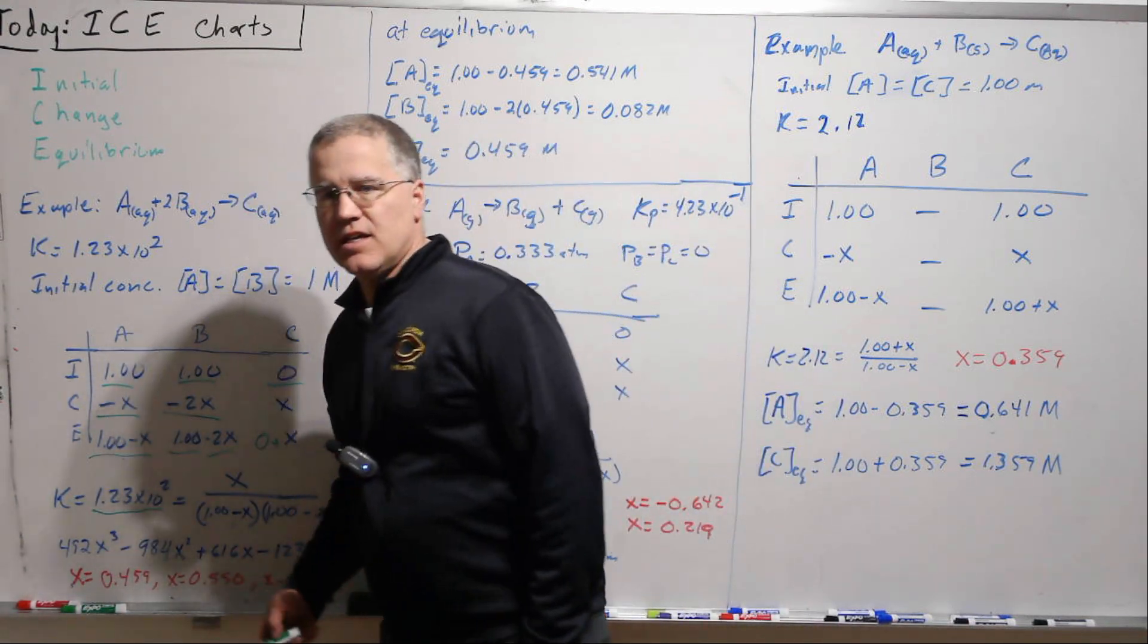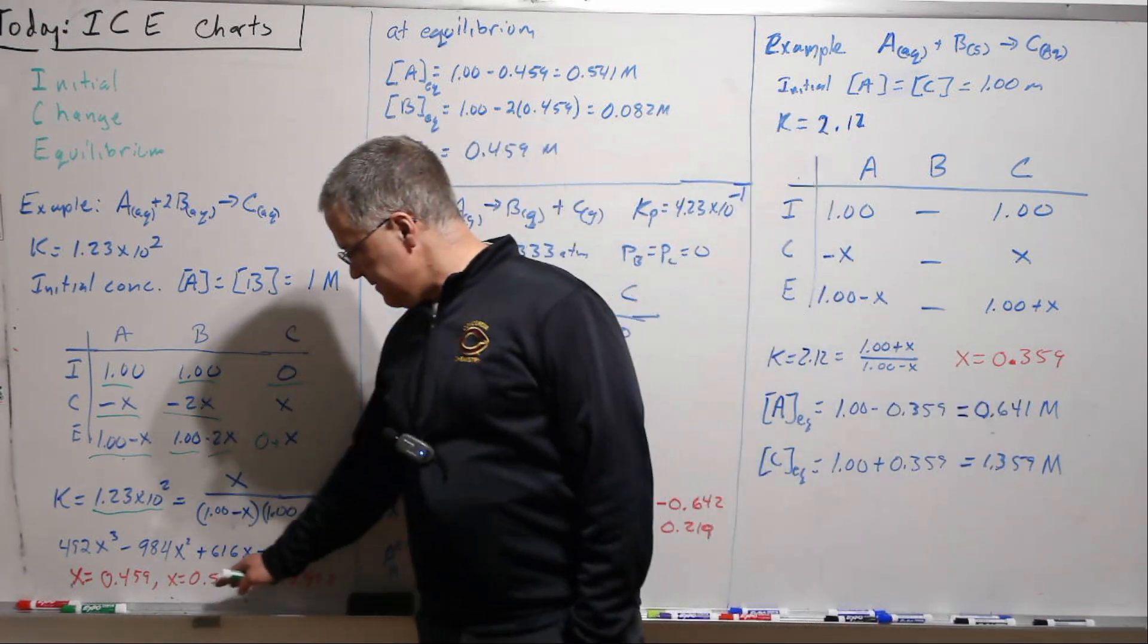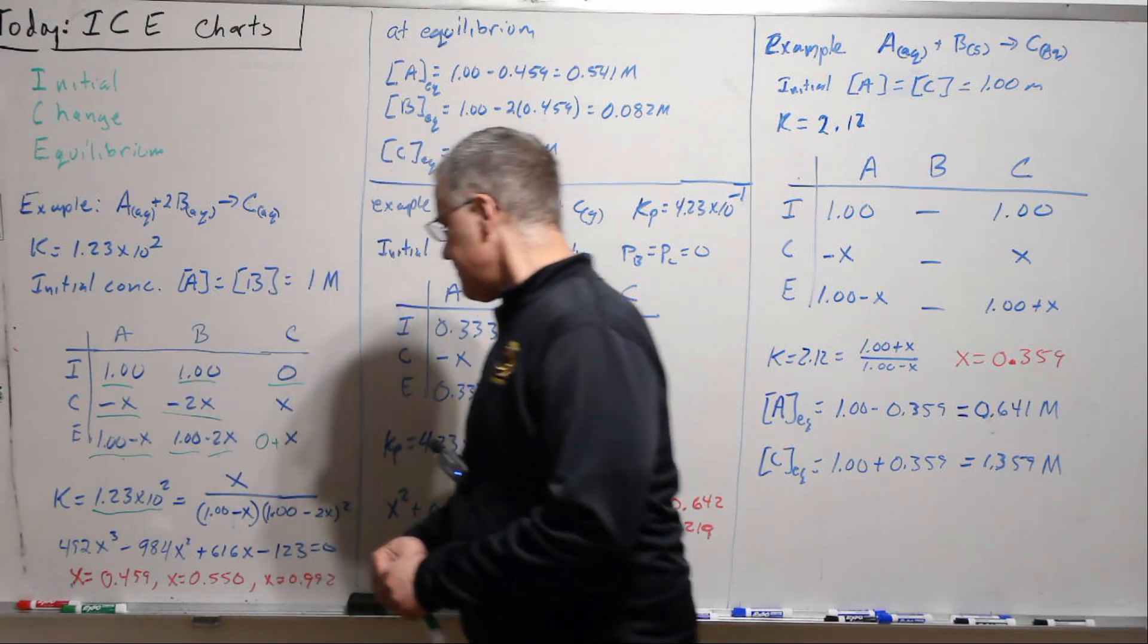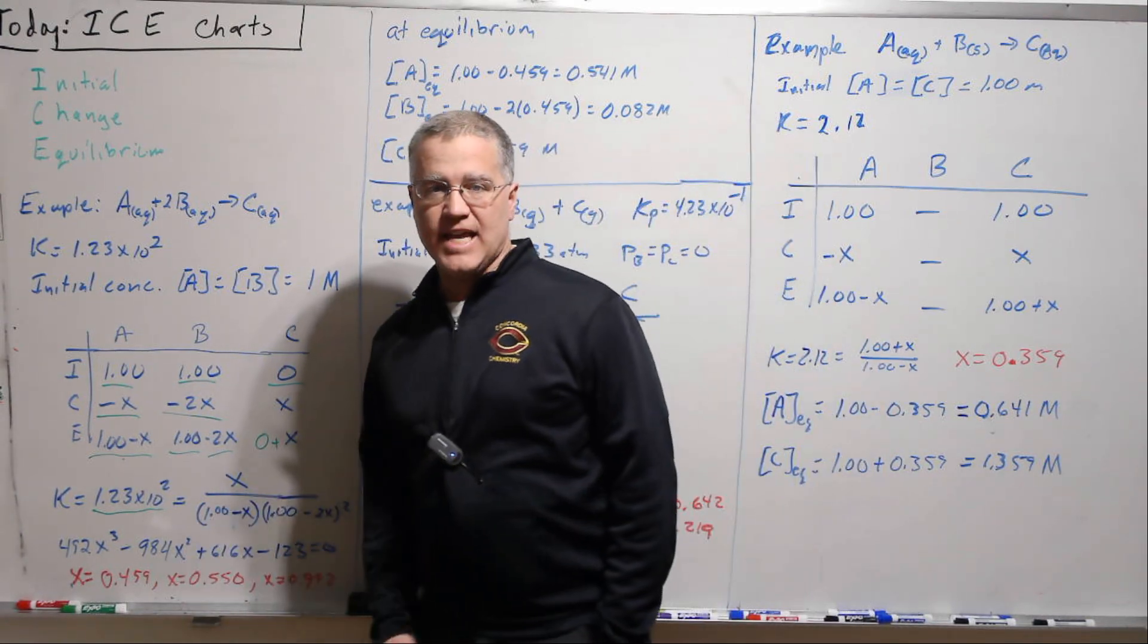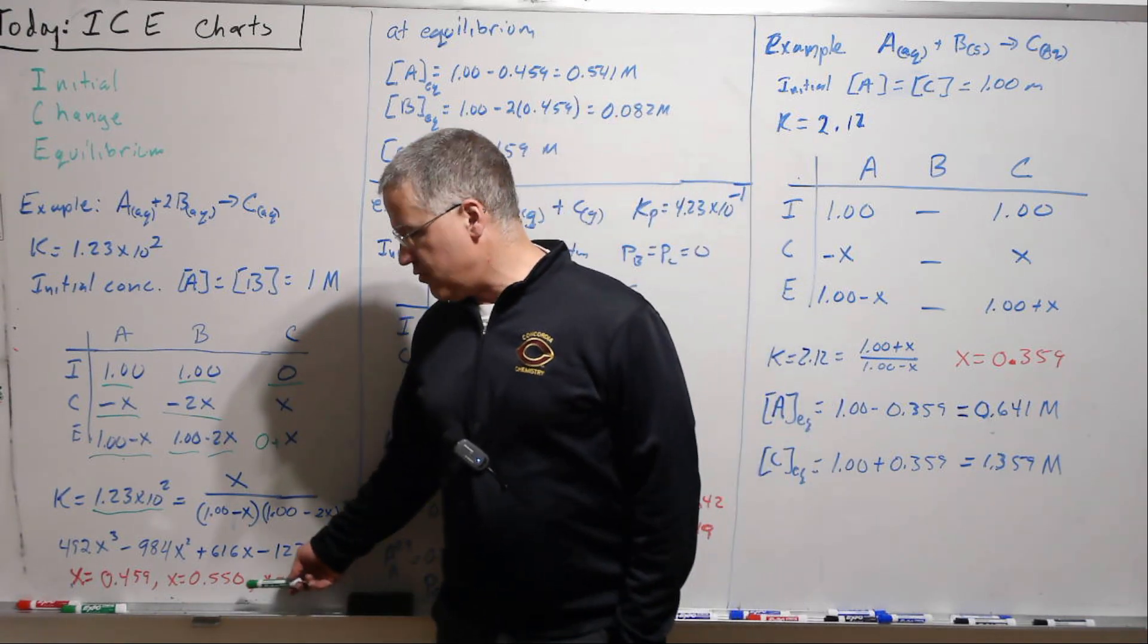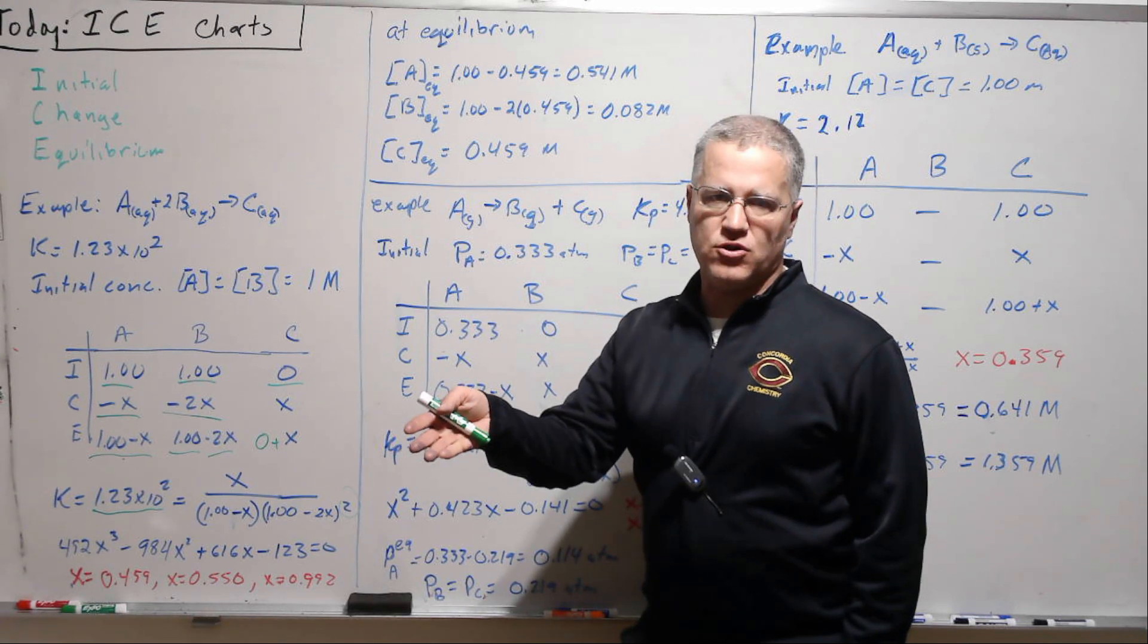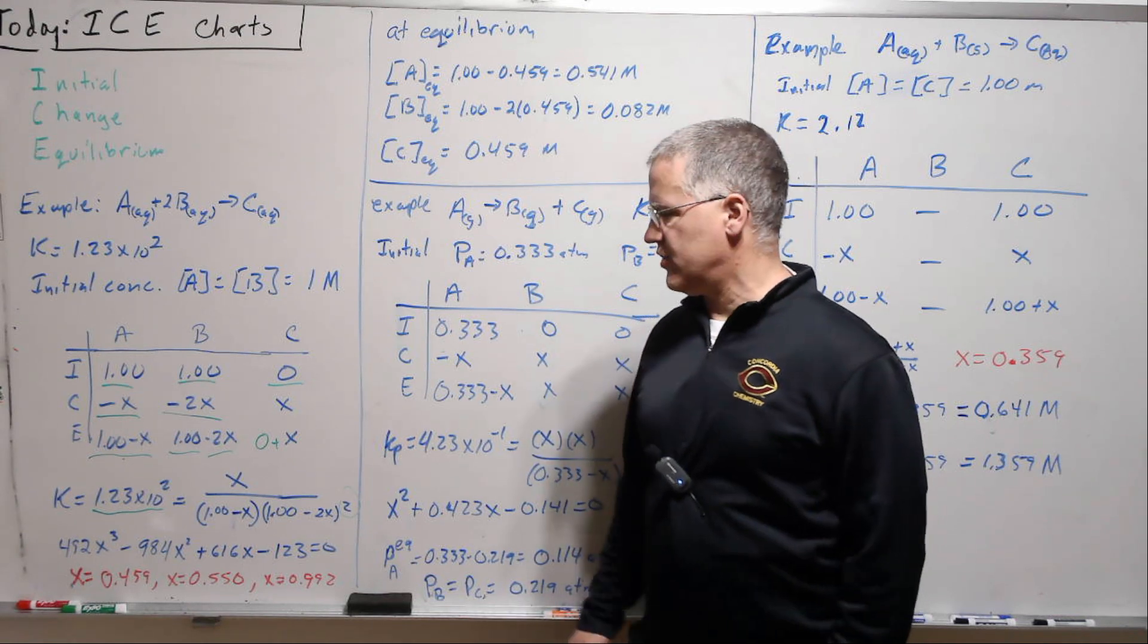Now when we have a cubic equation, fundamental theorem of algebra tells us we're going to have three solutions, and in this case they're all real, and they're all actually not unreasonable, they're all positive. If any of them were negative that would be an unphysical solution, we could toss it out. So we have to do a little work to figure out which one of this is the physical solution. So we're very often in these ICE charts, we'll be solving polynomial equations and getting a bunch of non-physical solutions and one and only one physical solution.